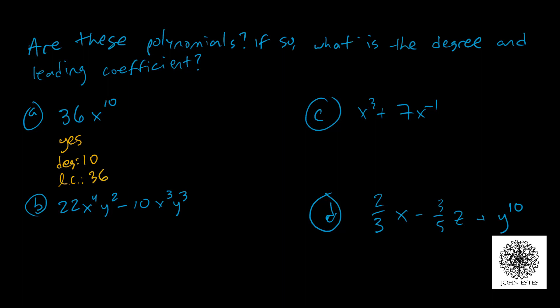Now this kind of polynomial has a special name to it. Since it only has one term, it's called a monomial. For part B, I have 22x to the 4th y squared minus 10x cubed y squared. It would be tempting to say this is not a polynomial, but it actually is. Yes, it's a polynomial. And it looks different because it has two variables.